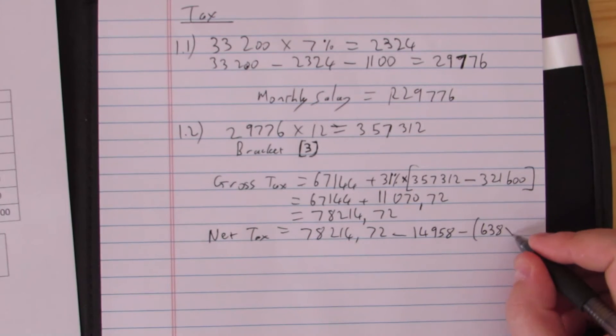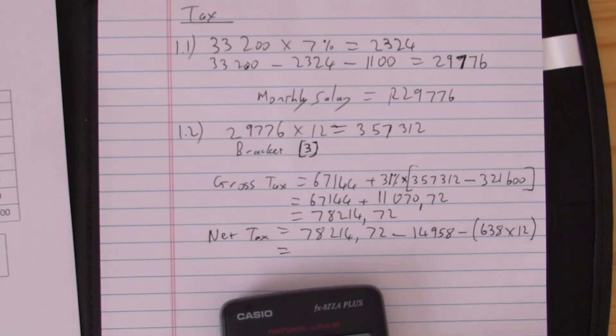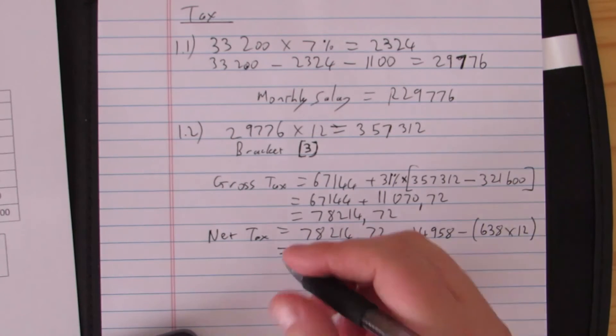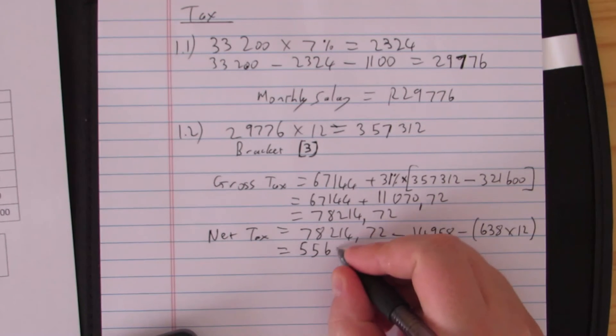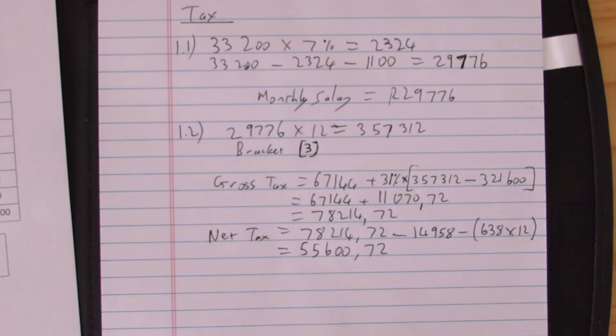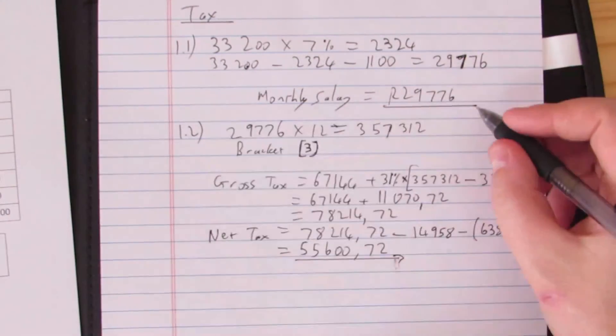And then we also need to take off the credits. He gets that credit, but it's for each month, so we need to multiply that by 12. You can type all of this into a calculator all at once. Nobody's really going to mind too much. Just check that you always put in the right numbers. 14,958—this is rebate—and then 12 times 638 rand. This is rebate. So 55,602.72, that would be his net tax. That would be my final answer there, same way that monthly salary would be my final answer there.